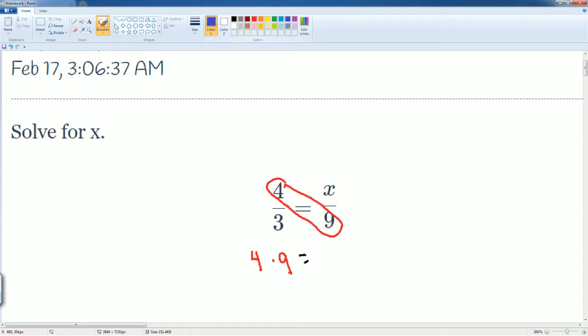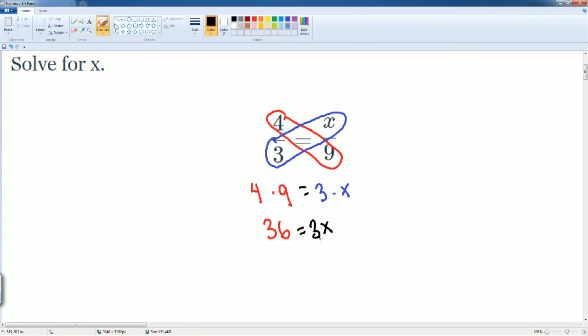Three times x. So 4 times 9, which is going to be 36, is equal to 3x. To solve for x, you have to now divide by 3 on both sides. On the right hand side, this cancels leaving you with just an x.